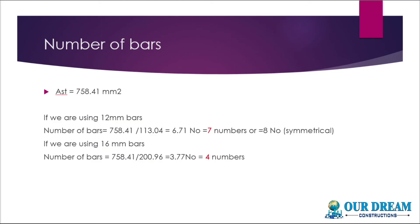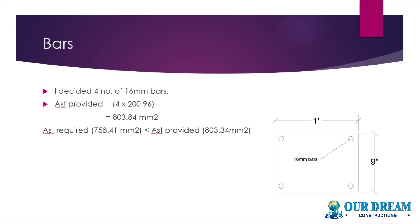For symmetrical purposes, provide 8 bars — or we can provide 16 mm bars. If we provide 16 mm bars: Ast required 758.41 ÷ area of one 16 mm bar. You can mix it — 8 numbers of 12 mm bars or 4 numbers of 16 mm bars. So I will provide 4 numbers of 16 mm bars. 8 numbers of 12 mm bars gives about 44 kg; 4 numbers of 16 mm bars gives about 75 kg.